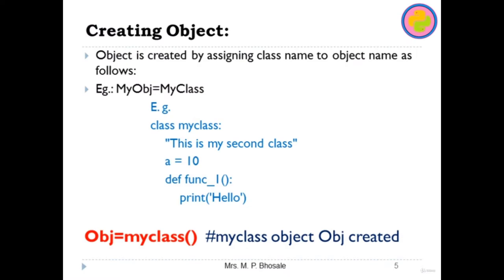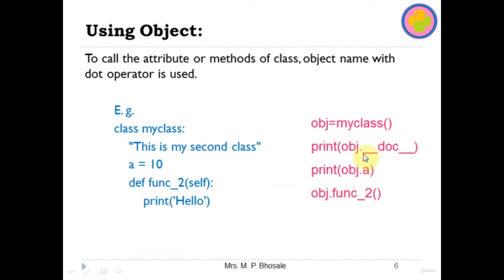Now we will discuss about the object. An object is created by simply assigning the class name to the object name. The syntax is: object_name = ClassName(). For example, if I have MyClass, I can write obj = MyClass(). Then using this object I can call the document string, the variable, and the function. This is the second way to call the attributes or methods of a class: object name, dot operator, then the attribute or method name.